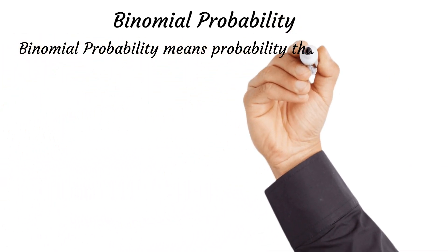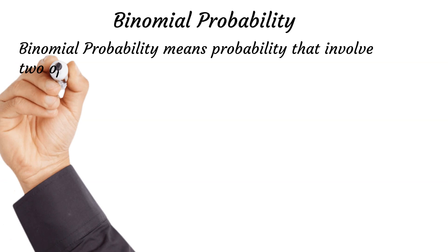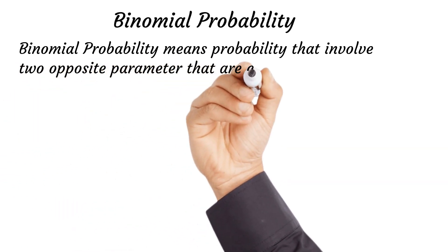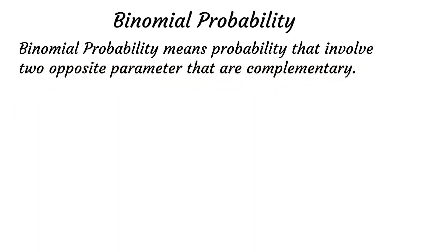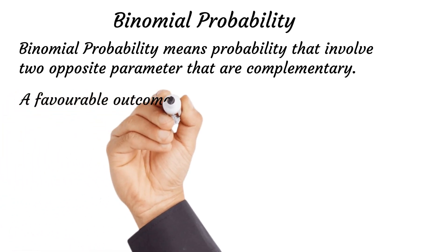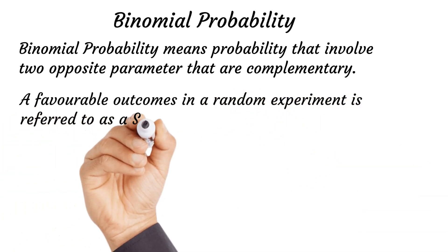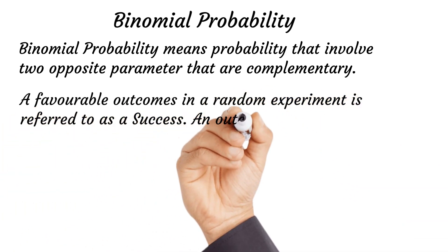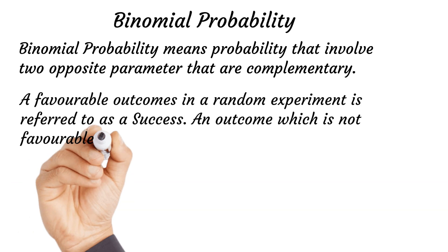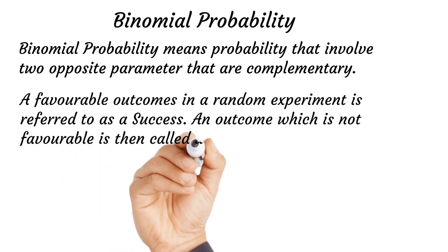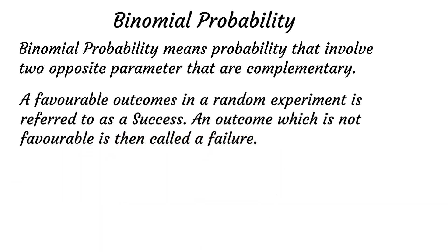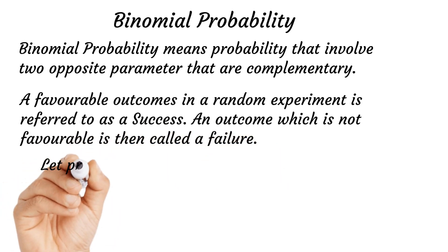Binomial probability means probability that involves two opposite parameters that are complementary. It can be success and failure, or it can be hitting a target or missing a target. A favorable outcome in a random experiment is referred to as a success; if the outcome is not favorable, we can take it as a failure.